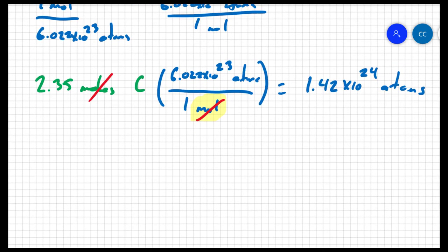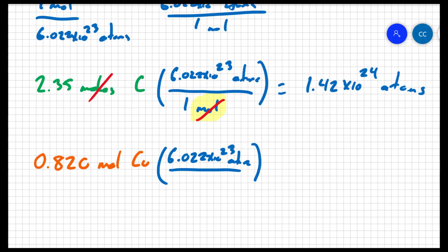In this problem, I'm starting with 0.820 moles of copper. And I'm going to use the same conversion factor we did before. I'm going to say there are 6.022 times 10 to the 23 atoms for every 1 mole. The moles cancel out.